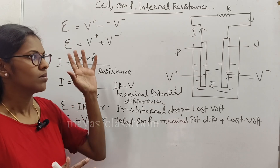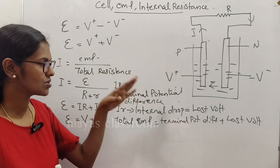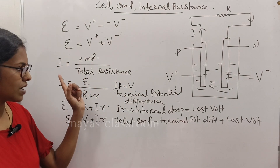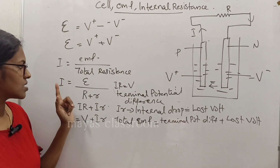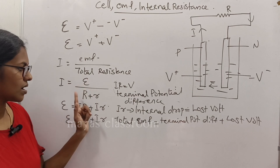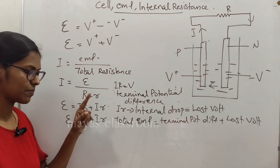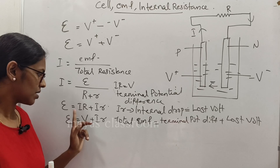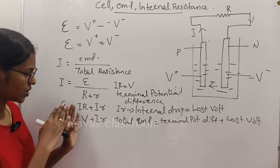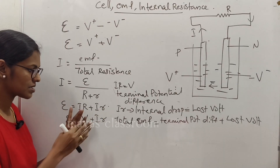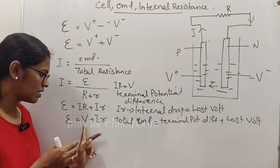In a closed circuit, the current is given by EMF divided by total resistance. Then I equals E divided by R plus r. So EMF equals I times R plus I times r, or EMF equals terminal voltage V plus the internal drop I times r.